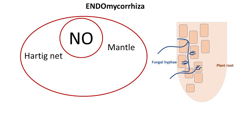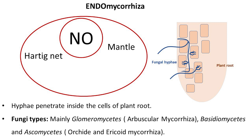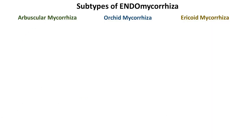Fungi in endomycorrhizal associations are mainly from Glomeromycotina. Basidiomycetes and ascomycetes fungi are also described in endomycorrhizal associations. These fungi do not usually produce the fruiting bodies that we commonly associate with mushrooms. Within the category of endomycorrhiza there are distinct subtypes, each with its own specific characteristics. The three primary subtypes include arbuscular mycorrhizal, orchid mycorrhizal, and ericoid mycorrhizal.